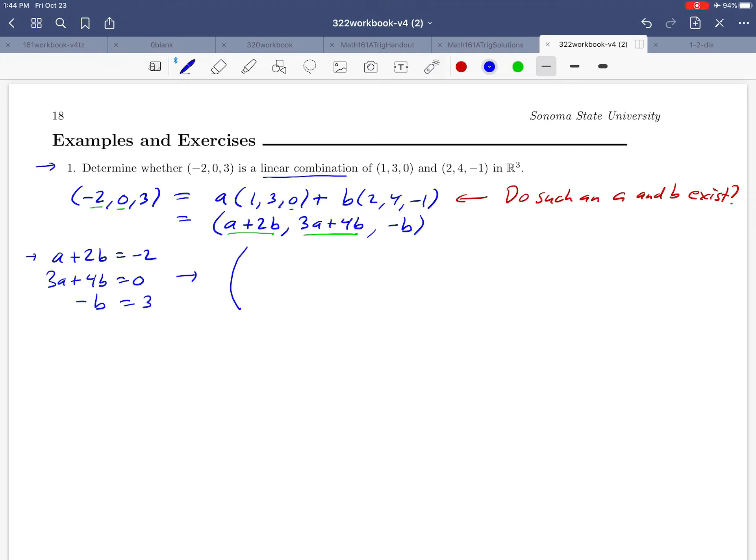So starting with the a + 2b, just focus on the coefficients. You're going to get a 1 and a 2, and then the right-hand side of the equation is a -2. Then moving on to the second equation, 3a + 4b = 0. Focusing on the coefficients, we're going to get a 3, a 4, and a 0. And then finally, we have no a's on the left-hand side of the last one, a -1, and then a 3.